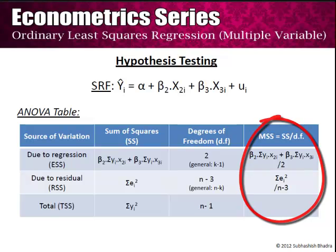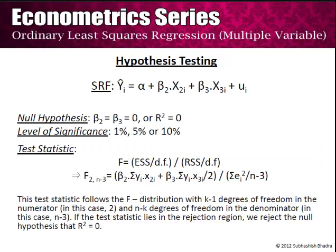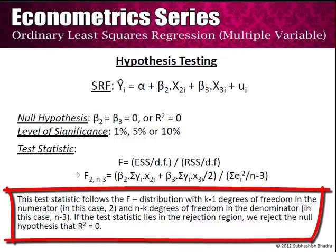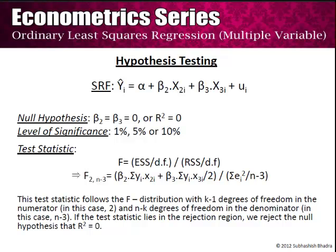So we are dividing MSS due to regression by the residual MSS. This F distribution will have k-1 and n-k degrees of freedom, because the degrees of freedom of the numerator is k-1 and of the denominator is n-k, as seen in the ANOVA table. If this test statistic lies in the rejection region, we will reject the null hypothesis that R-square equals 0.